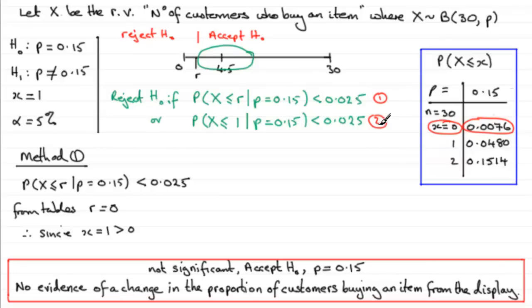I did say that I'd run through method 2 for you, so we'll just do that. If we're looking at method 2, how's this going to work? Well, for method 2, we can work out from tables straightaway the probability of X being less than or equal to the observed value 1, given that H₀ is true - that is, p equals 0.15.